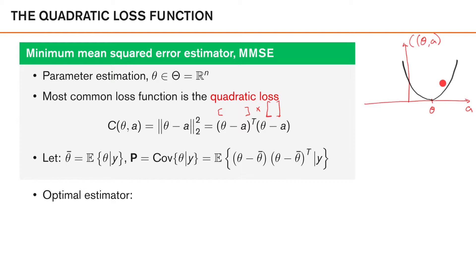Before we derive the optimal estimator using this loss function, we should introduce some notation. First, we let theta bar be the expected value of theta given y. Second, we let P be the covariance matrix of theta given y — the posterior covariance of theta after observing y — defined like this.